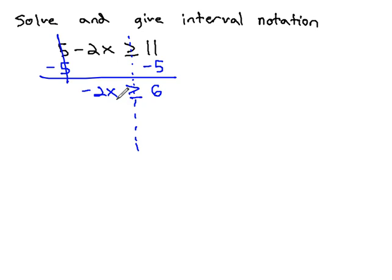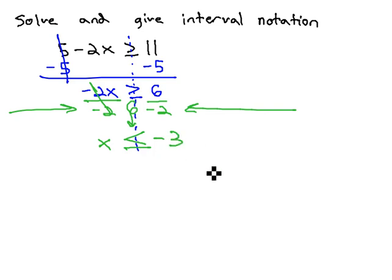Finally, we get the x alone by dividing both sides by negative 2. Notice we're dividing by a negative. When this happens, the inequality symbol will have to flip directions. Instead of greater than or equal to, it's now less than or equal to. x is less than or equal to negative 3.